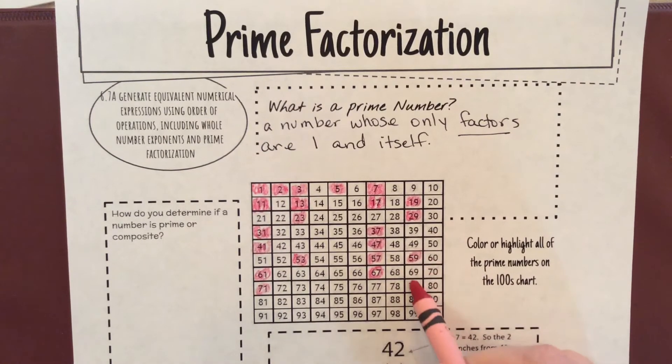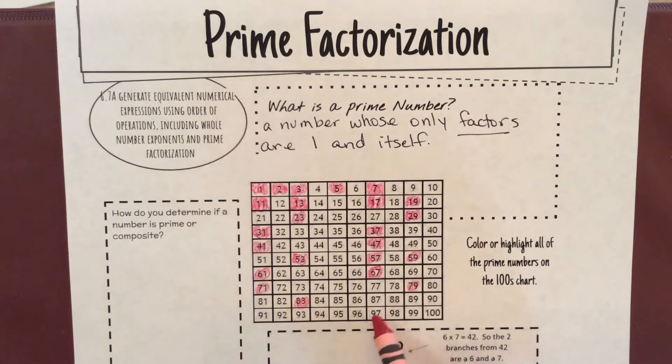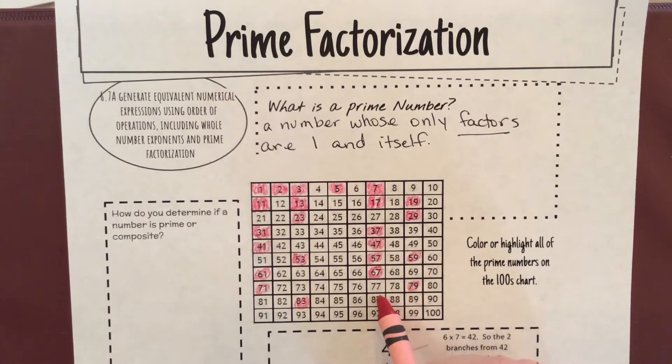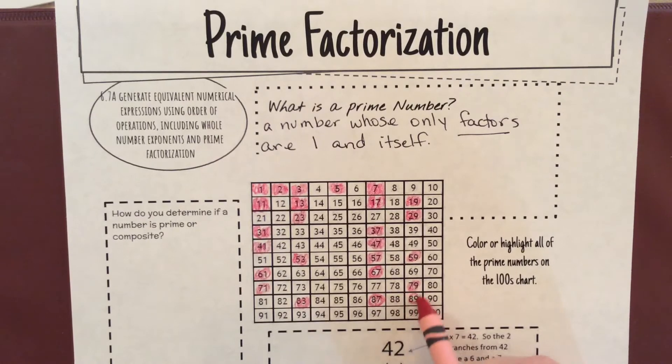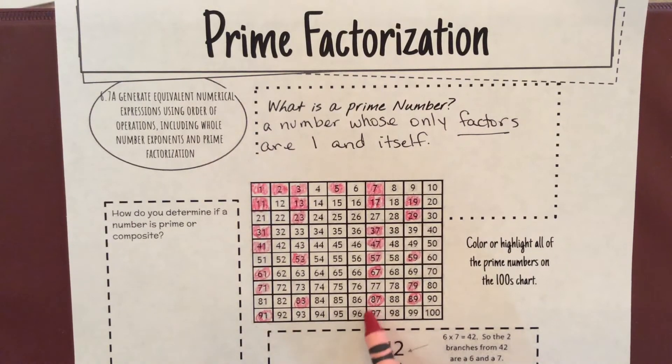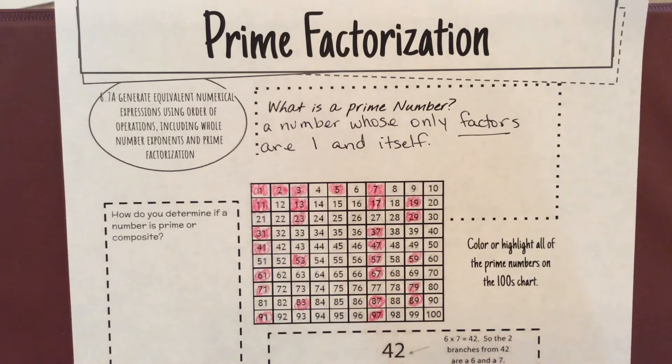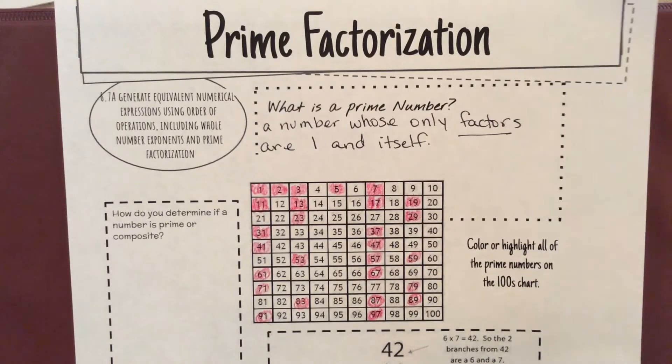Oh, I think I missed 59 and 79. 81, let's see, 83 is prime, 87 is I believe prime, 89, 91, 97. Those should be, I believe, all of your prime numbers up to 100. And we can double check it too.